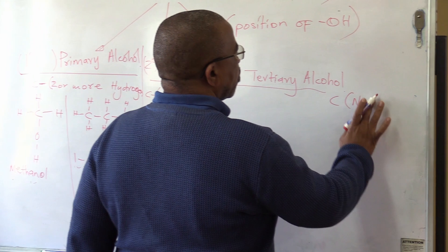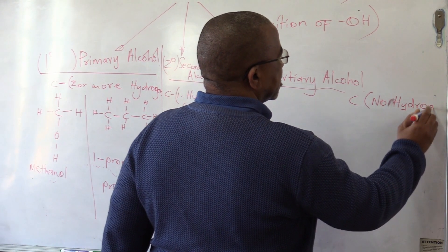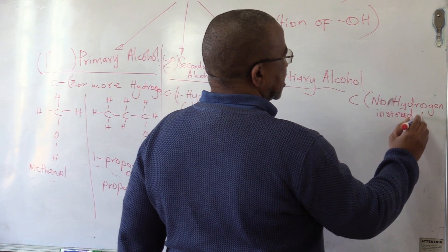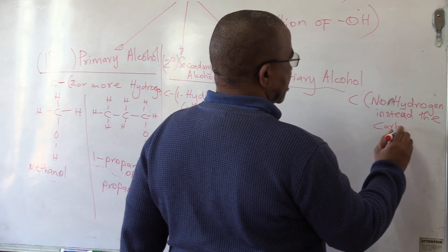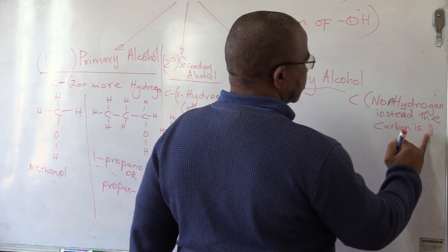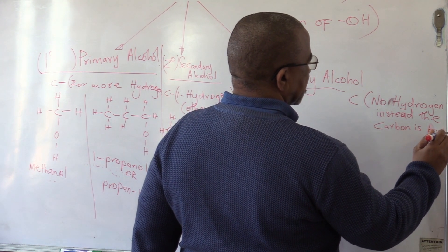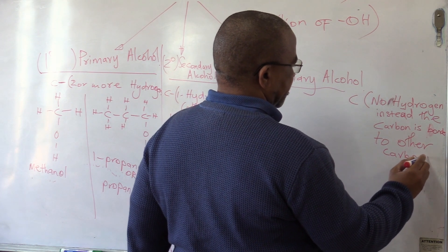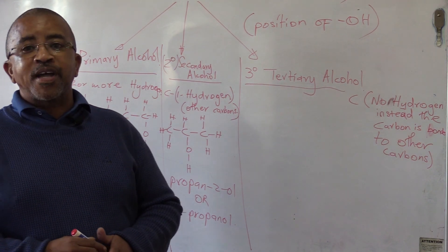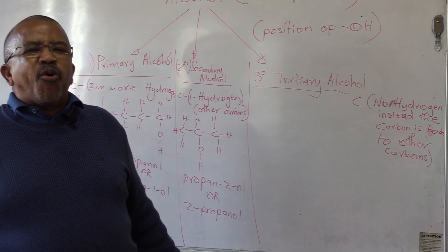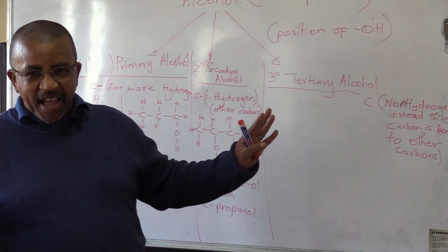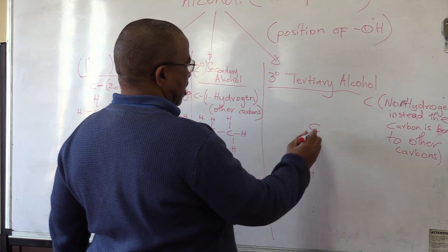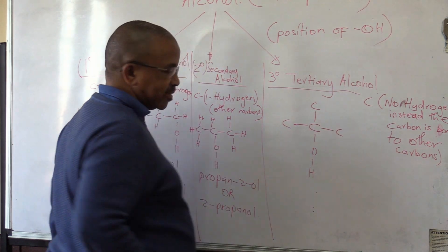For tertiary alcohol, the OH is bonded with a carbon that has no hydrogen at all. Instead, that carbon is bonded to other carbons — carbon, carbon, carbon — no hydrogen bonded to that carbon where the OH is attached.